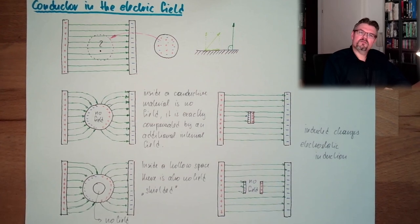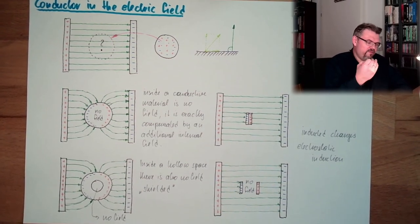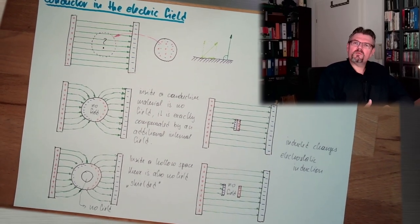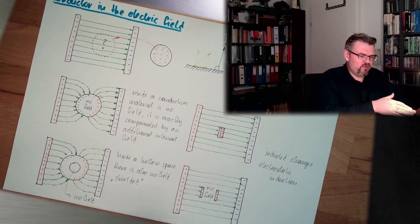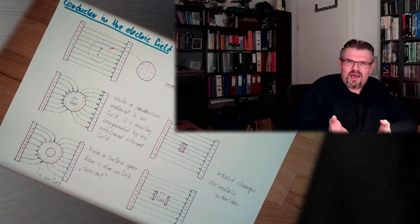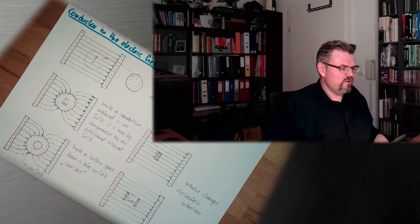So this is how a conductor behaves in an electric field. Next time, we are going to talk about what happens if we have an isolating material. In that case, these things do not apply, because the charges cannot move — it's an isolating material. Does it still have an effect on the electric field? I think I tell no secret if I say yes — but why? We will see in the next video. Isolator in the electric field. Thank you very much for listening. Goodbye.